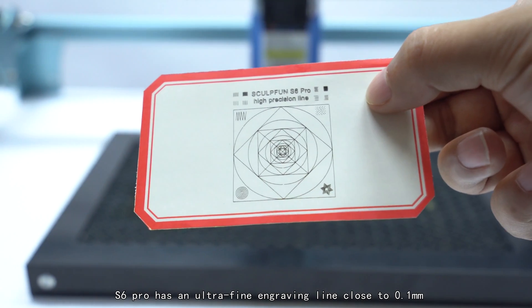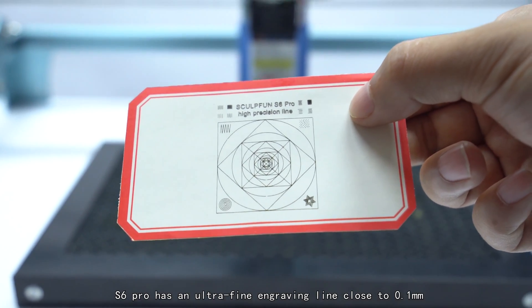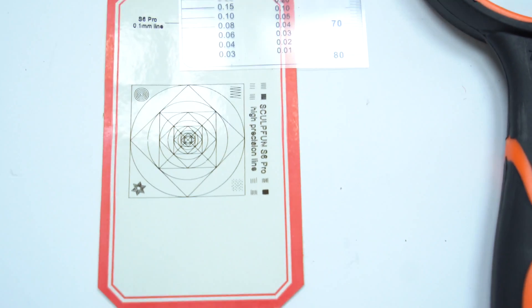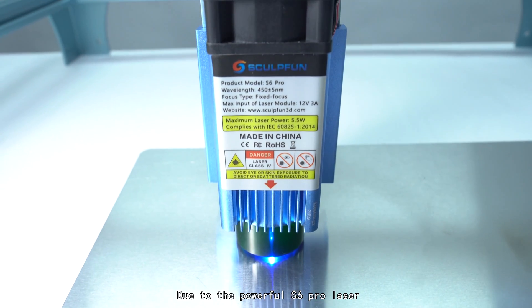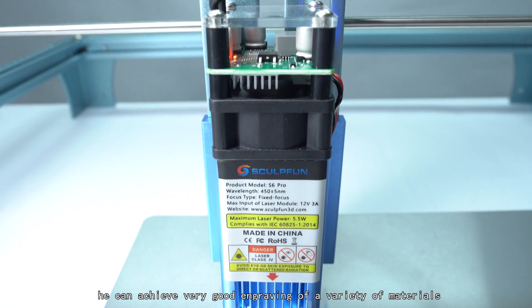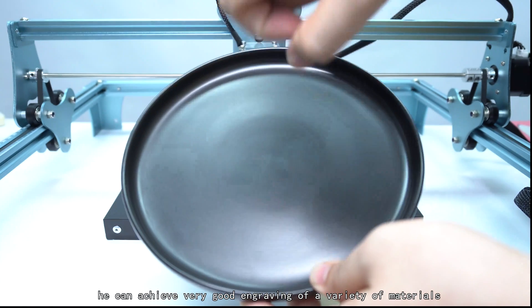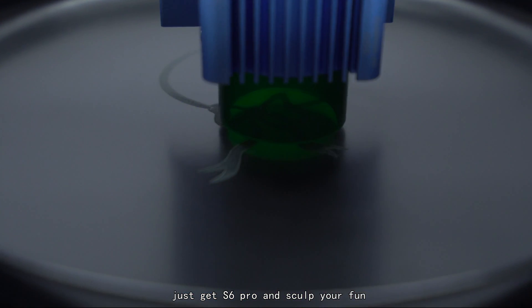S6 Pro has an ultra-fine engraving line close to 0.1mm, which can satisfy many professional engravings. Due to the powerful S6 Pro laser, it can achieve very good engraving of a variety of materials. Just get S6 Pro and sculpt your fun.